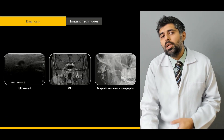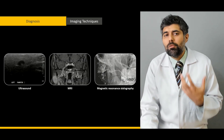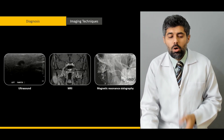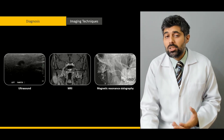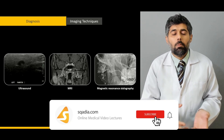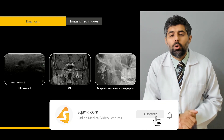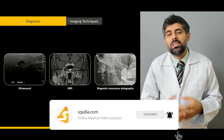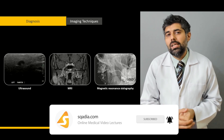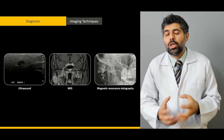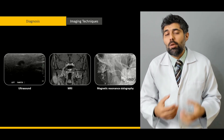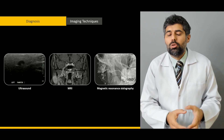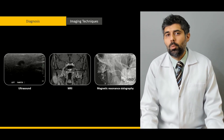Then we're going to learn about various imaging techniques — why the ultrasound is important, why the MRI is important, and why MR sialography is becoming more and more important in regards to the Chagrin Syndrome.